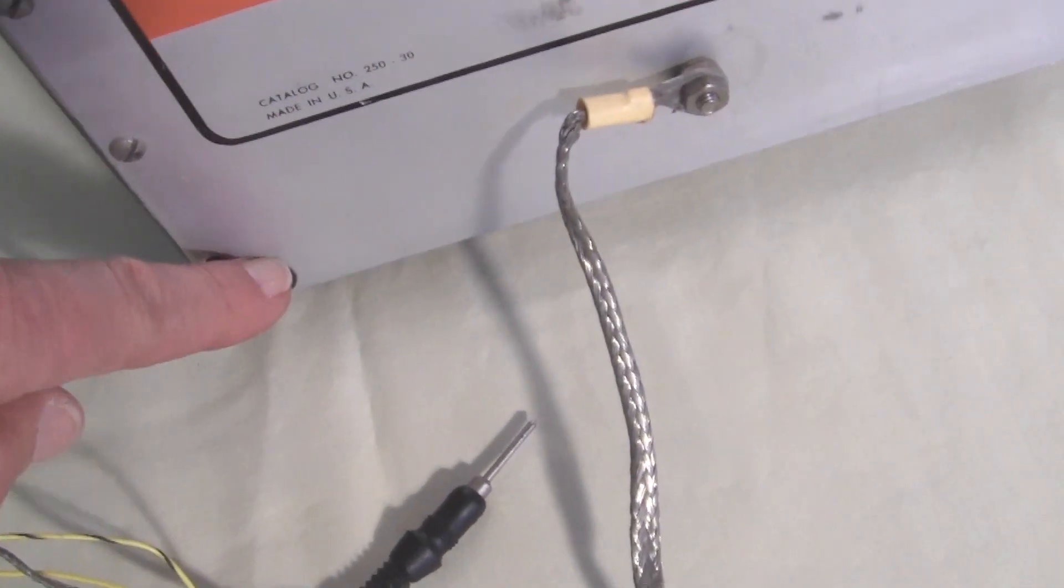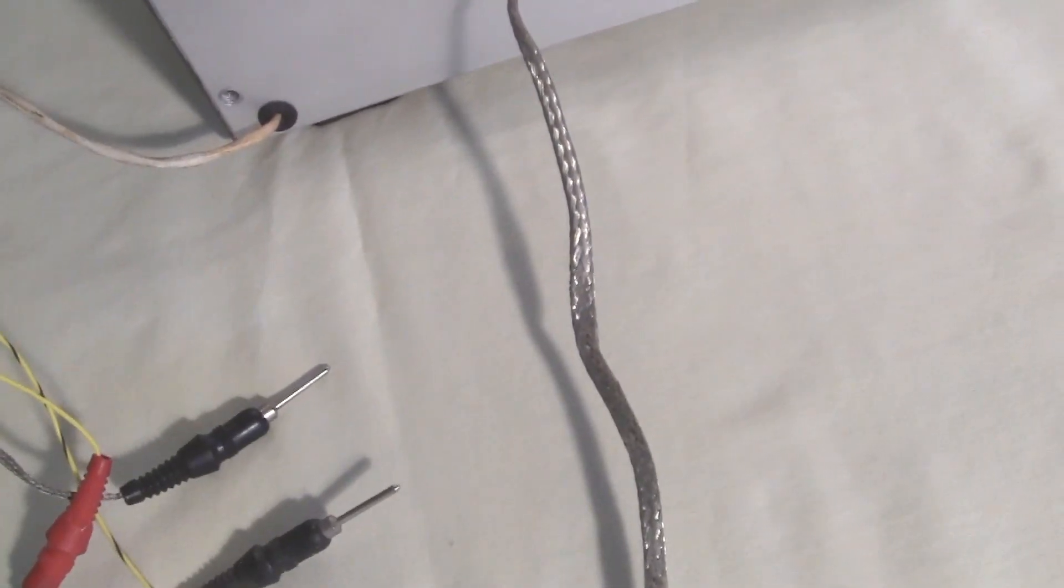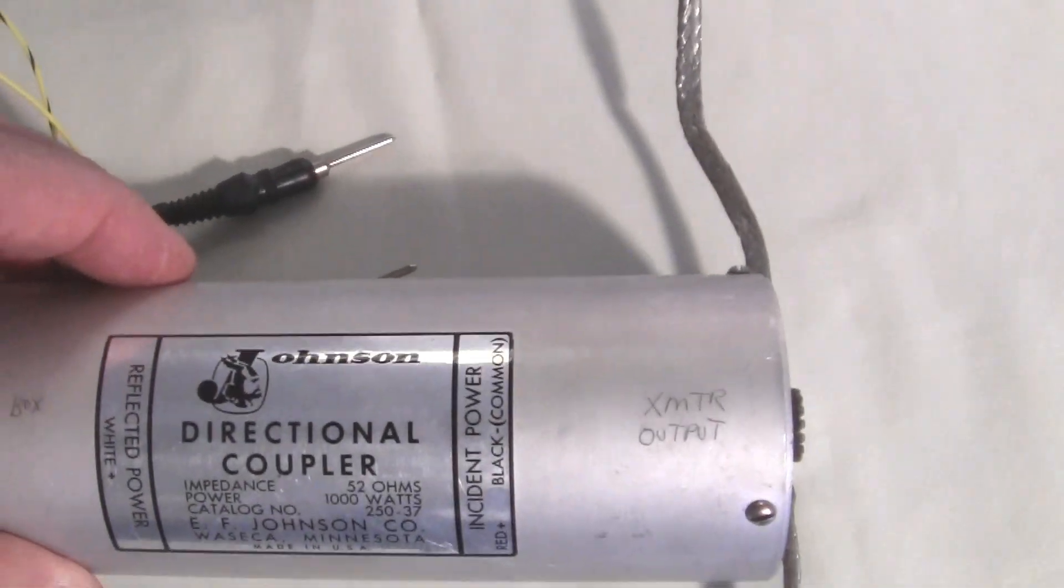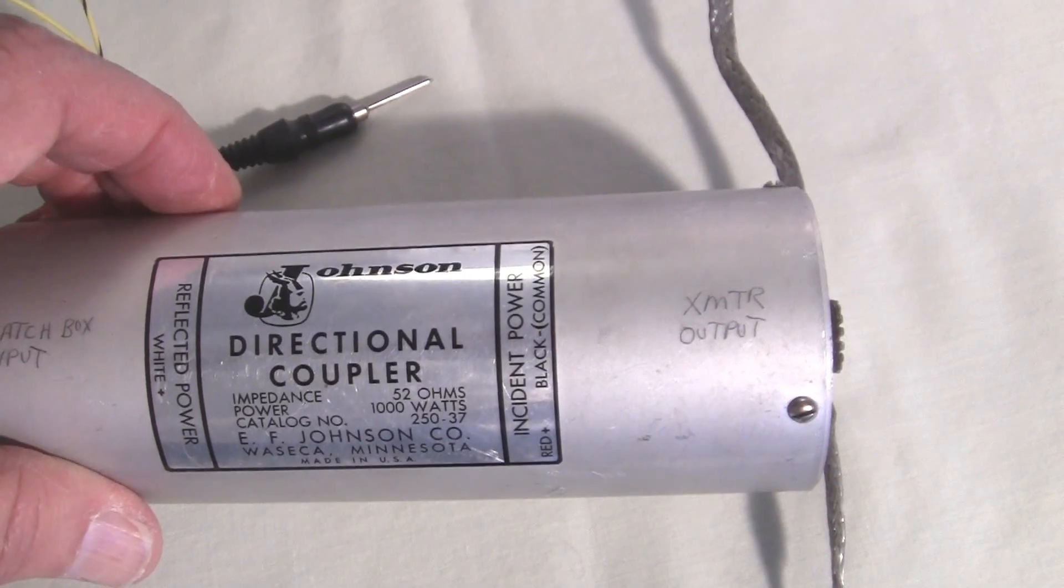The rest of the circuitry is inside the Johnson matchbox. So that plugs into this directional coupler, which is in series with the coax line going to the antenna.